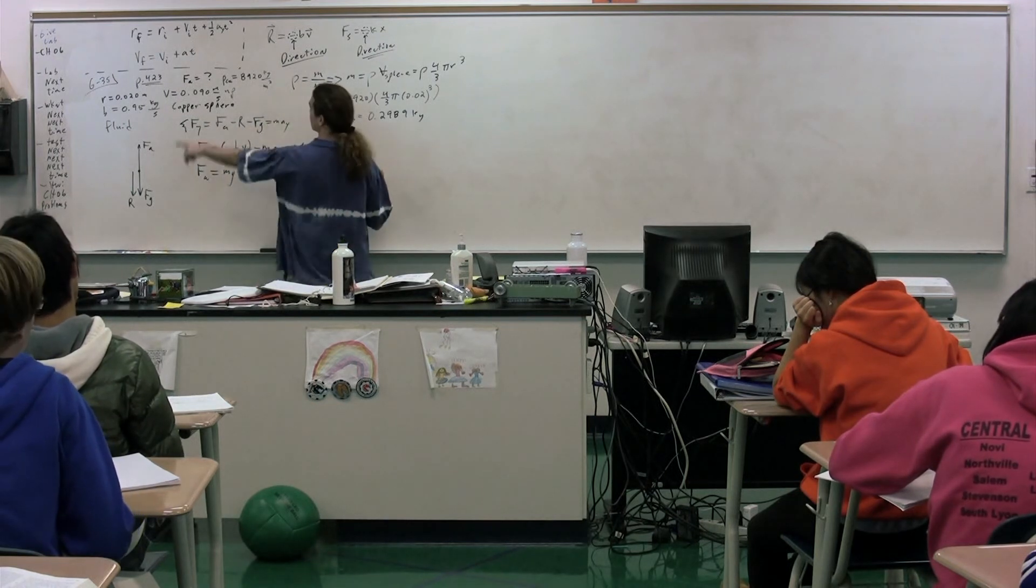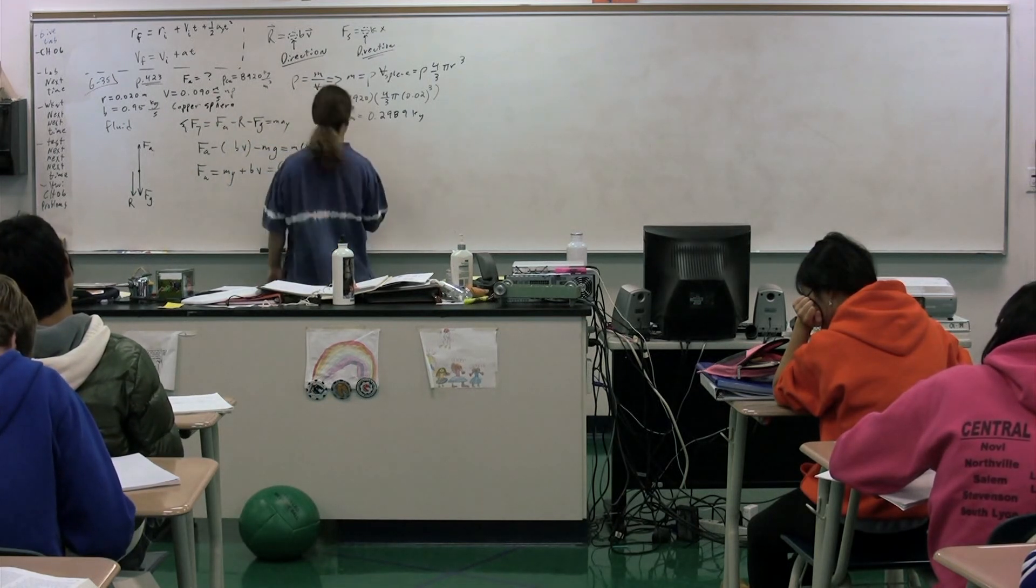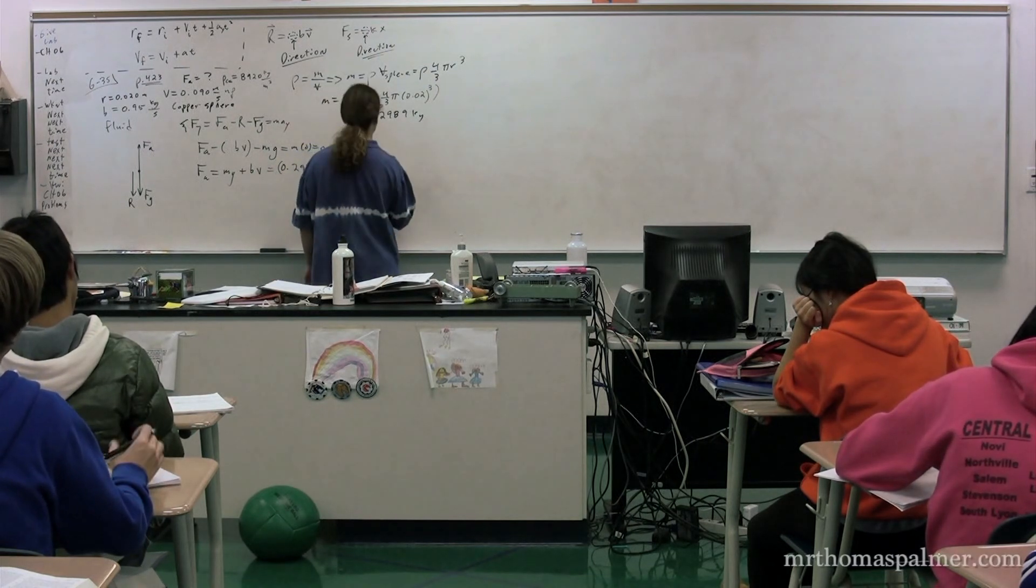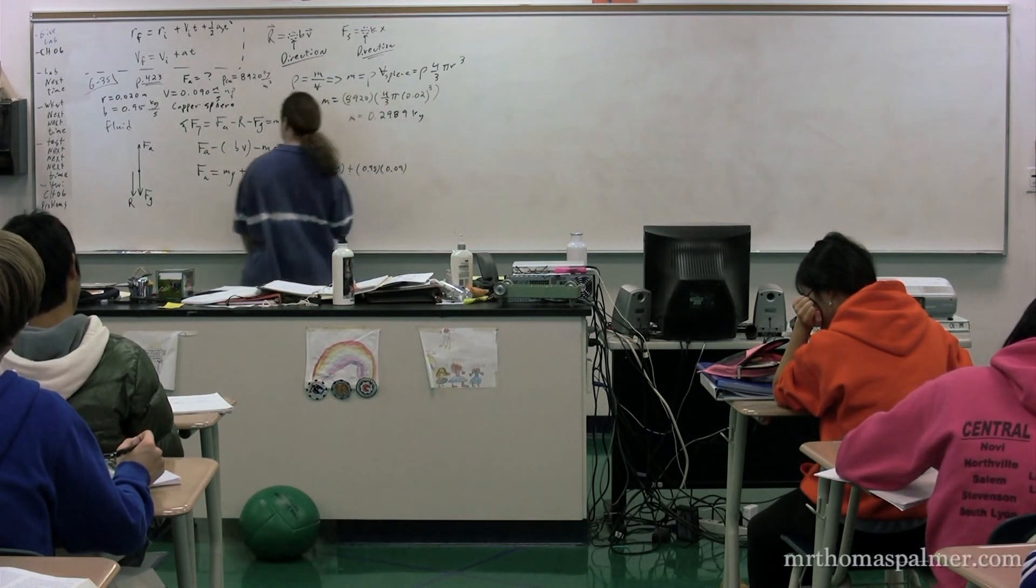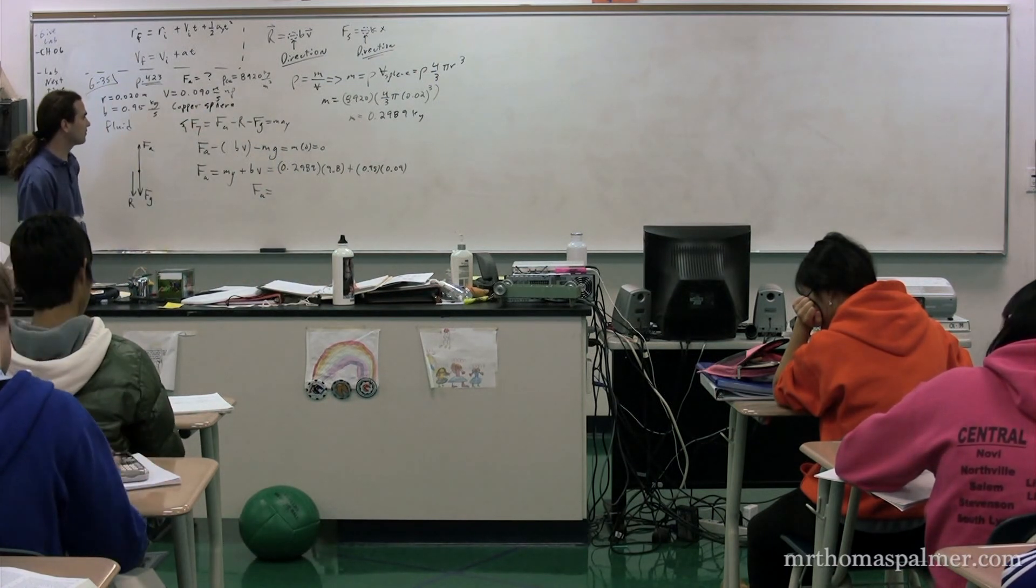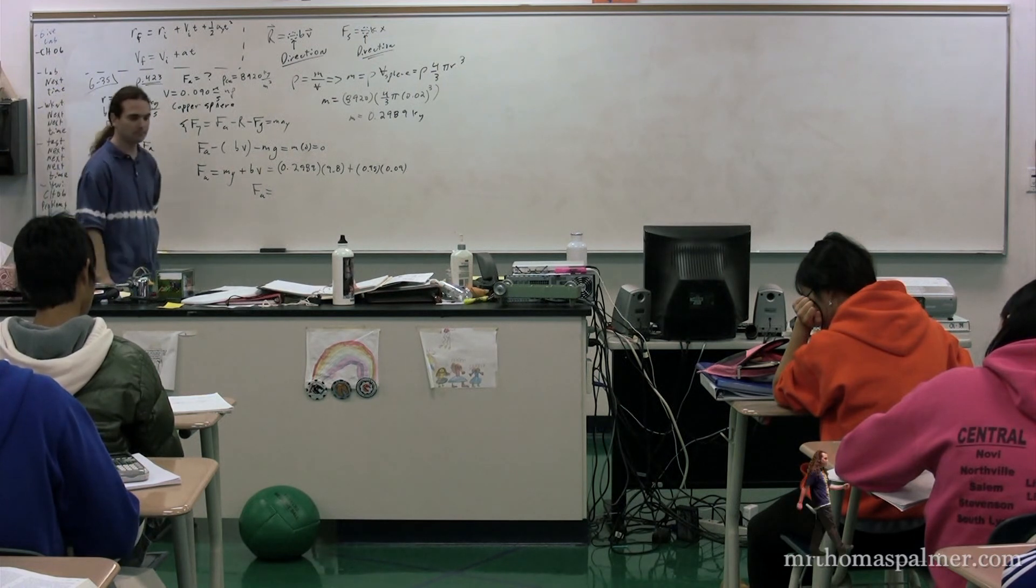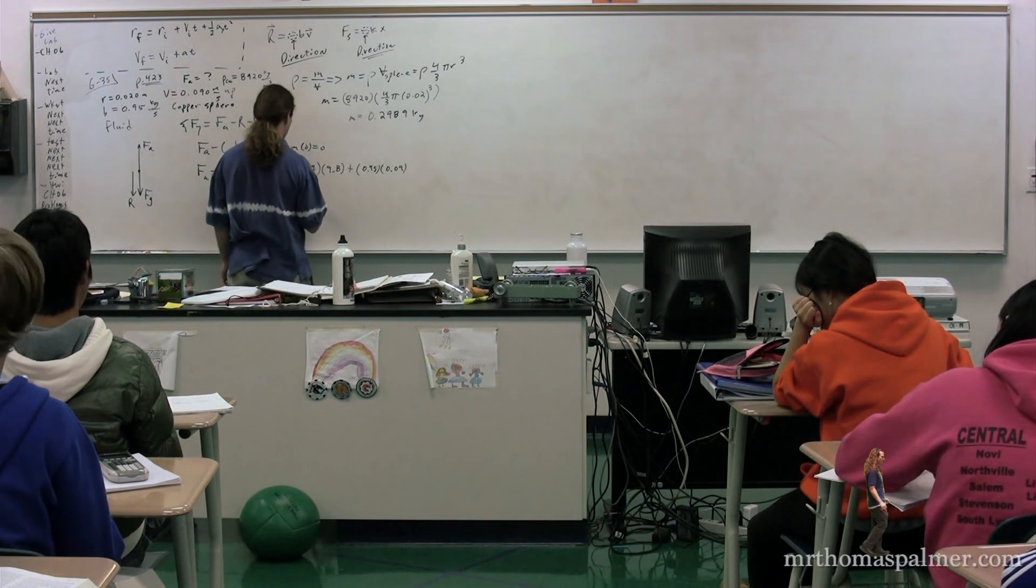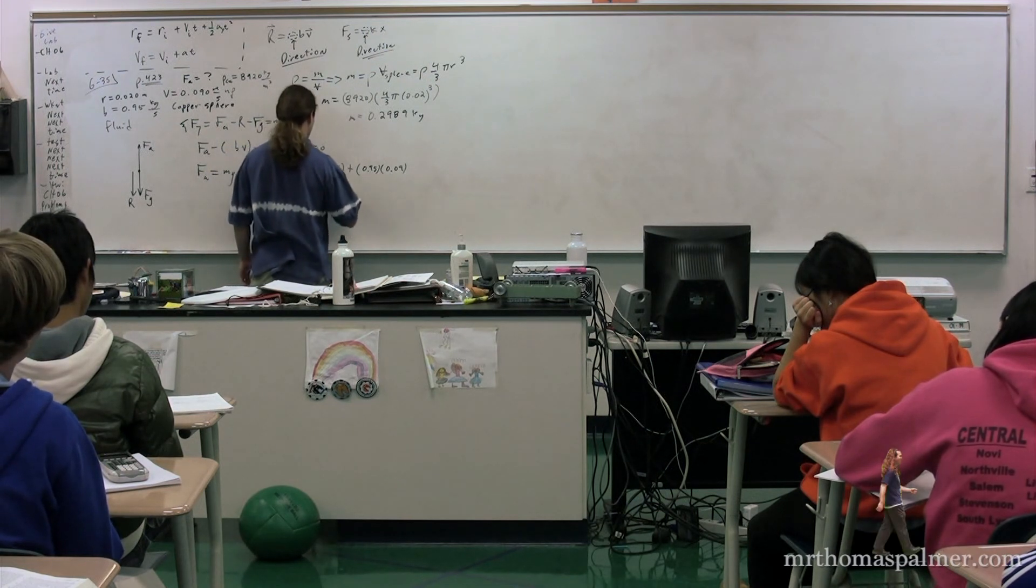Therefore we have 0.2989 multiplied by the acceleration of gravity, 9.8 plus the proportionality constant which was 0.95 multiplied by the velocity 0.09.